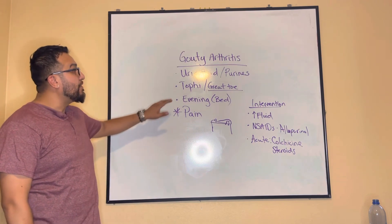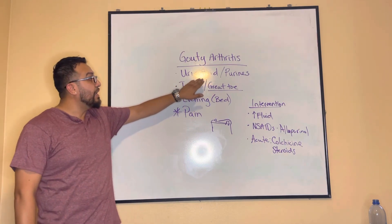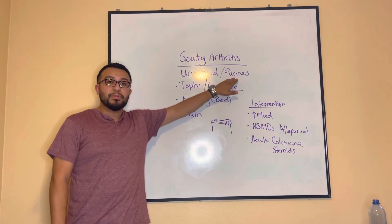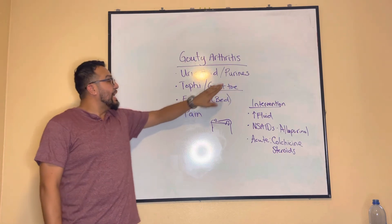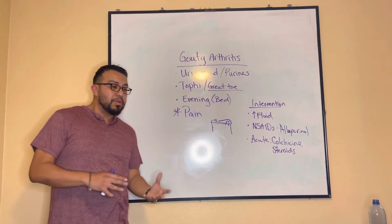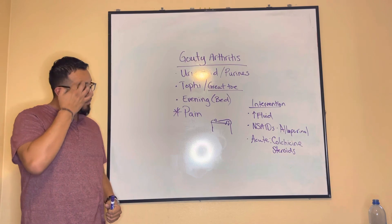In summary for gouty arthritis: you have to be able to recognize foods that contain uric acid, which we call purines. Immobility of the great toe is very important, because mobilizing it causes more pain.